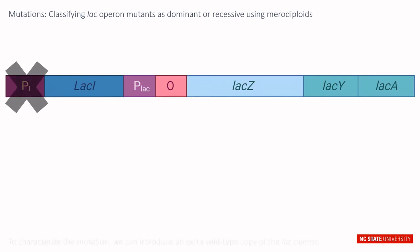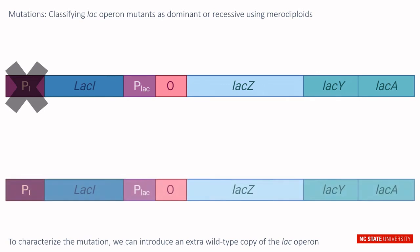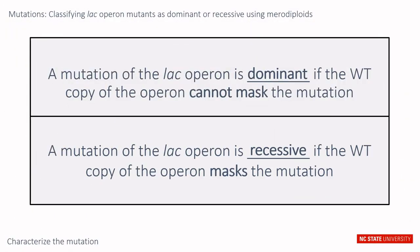Mutations can occur in the lac operon, and to characterize the source of the mutation, we can introduce an extra wild type copy of the operon. This is called a merodiploid E. coli strain. A mutation of the lac operon is dominant if the wild type copy cannot mask the mutation, and recessive if the wild type copy masks the mutation. We will look at some examples to better understand what is meant by masking the wild type copy.